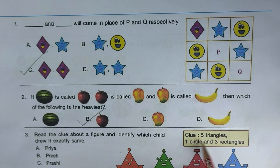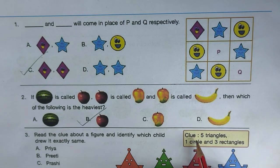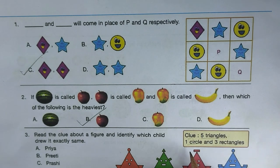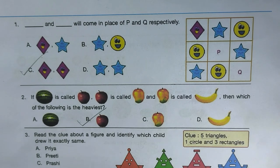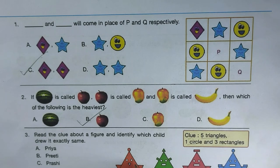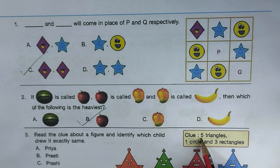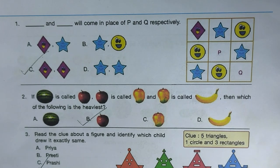Next question: read the clue and identify which child drew the figure. The clue says five triangles, one circle, and three rectangles. Start with the minimum — one circle. Only the blue figure on the right has one circle; the others have two or three circles. Confirming: five triangles and three rectangles are present. So option D, Pinky, is the right answer.